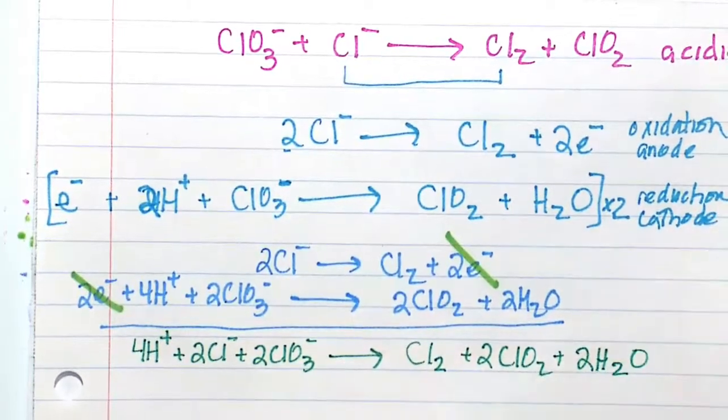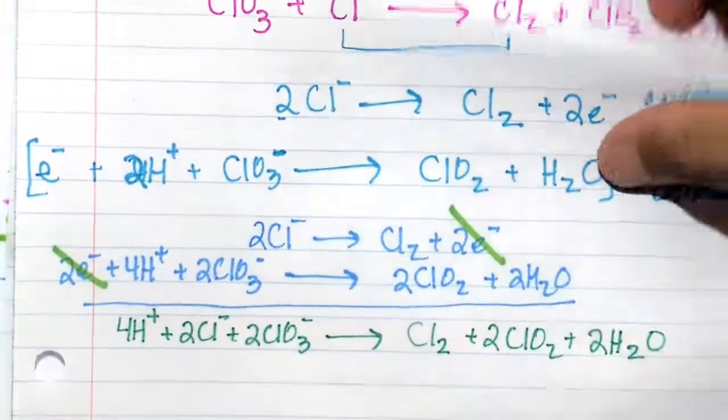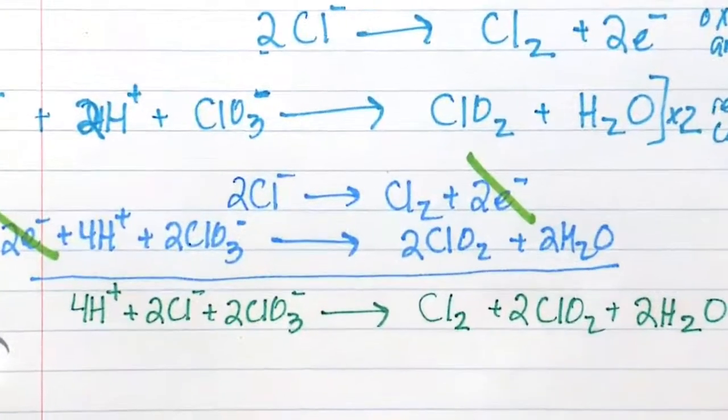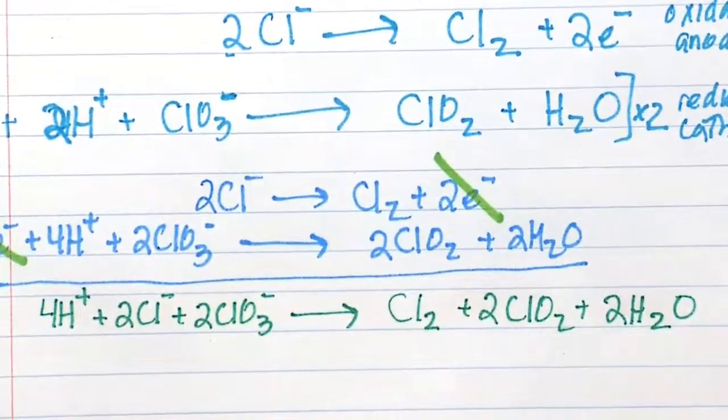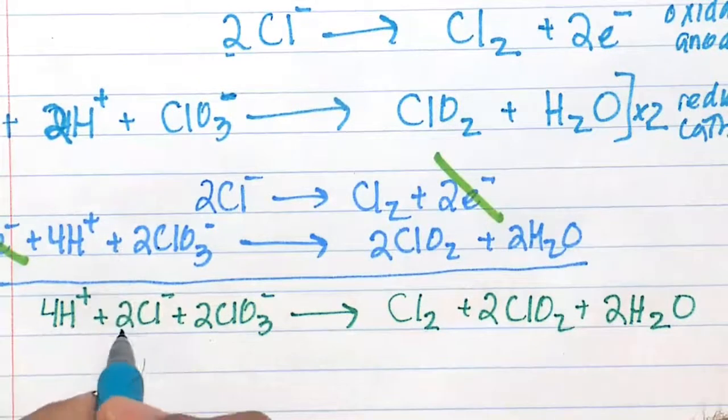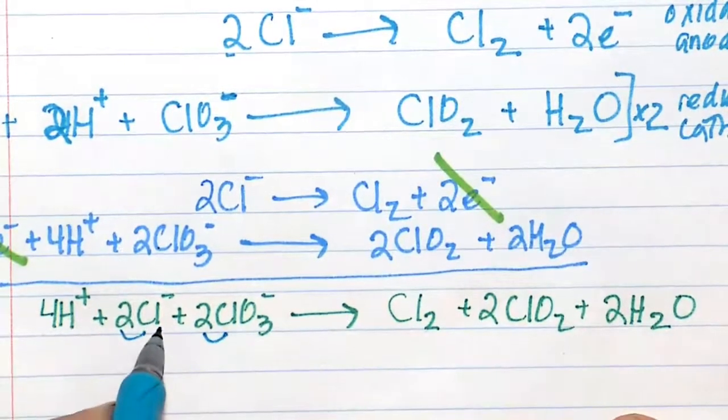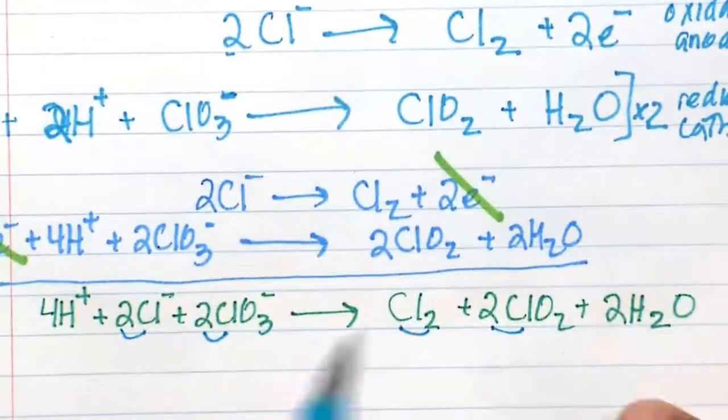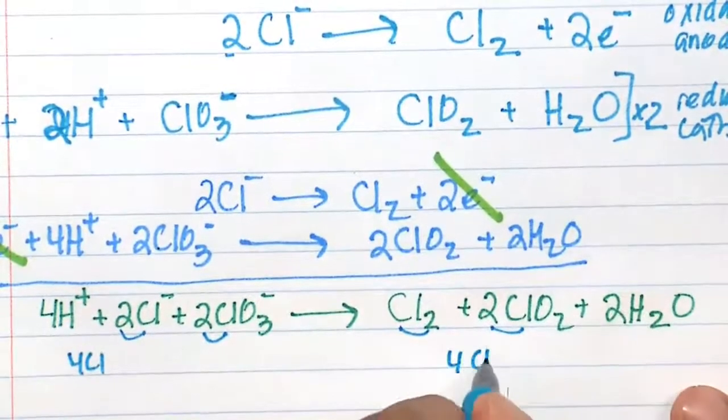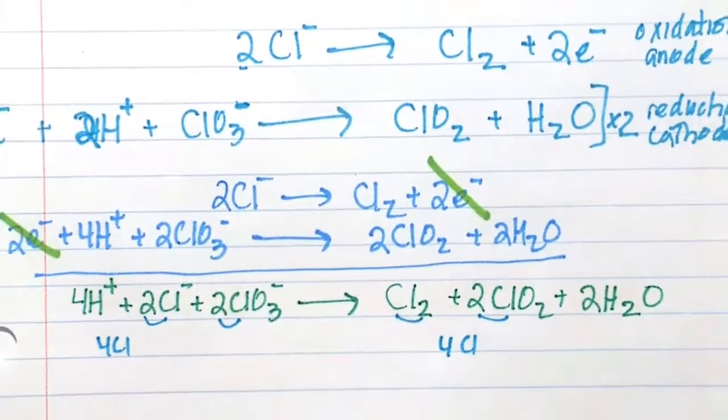Let's double check and make sure we are okay in terms of balancing the atoms as well as balancing the charge. So we have 2Cl plus 2Cl is 4. 2Cl plus 2Cl is 4. So 4Cl, okay, that's good. Happy about that.